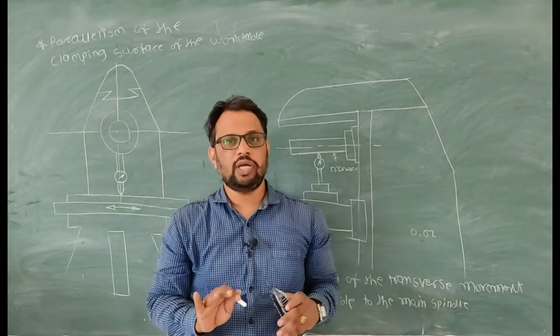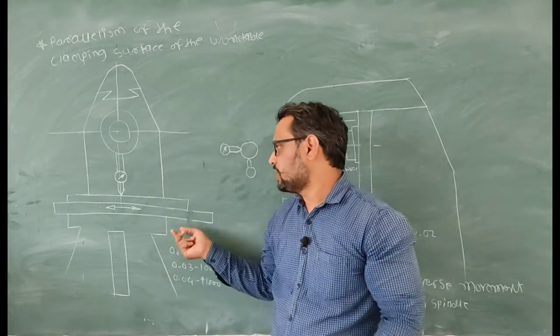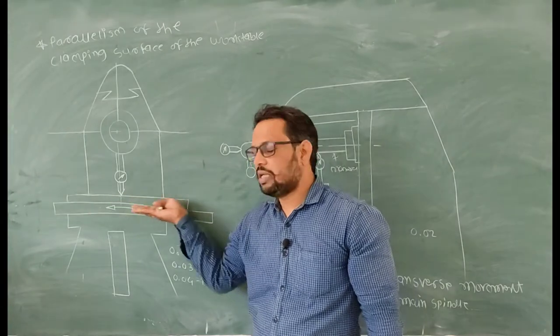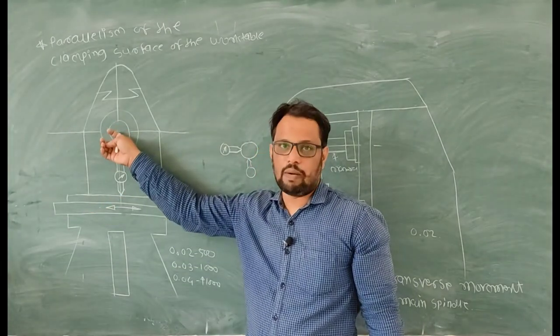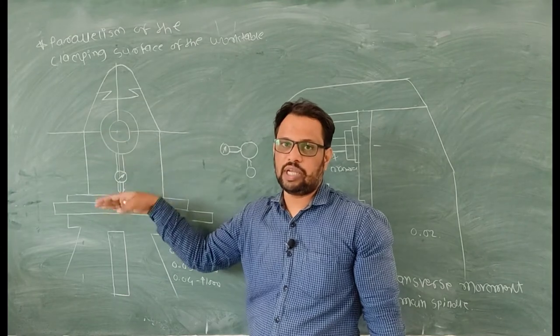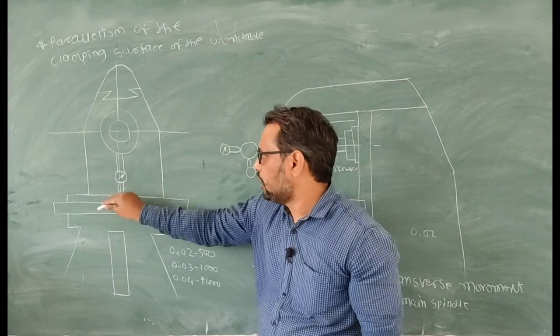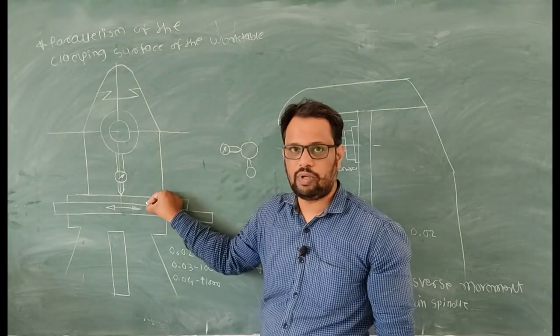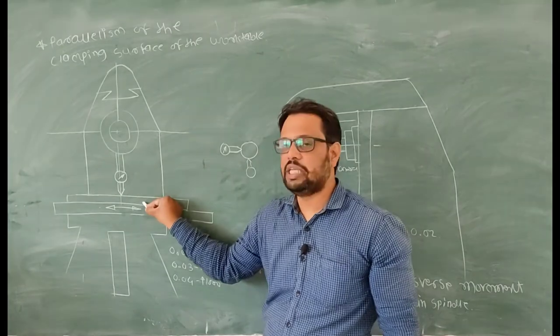If this concept is okay, then we will move towards our first case. In first case we have to check this parallelism, means this table and your arbor. In this case you have to check the parallelism with your clamping surface. Here you will mount a job when you are going to machine any job on this table.